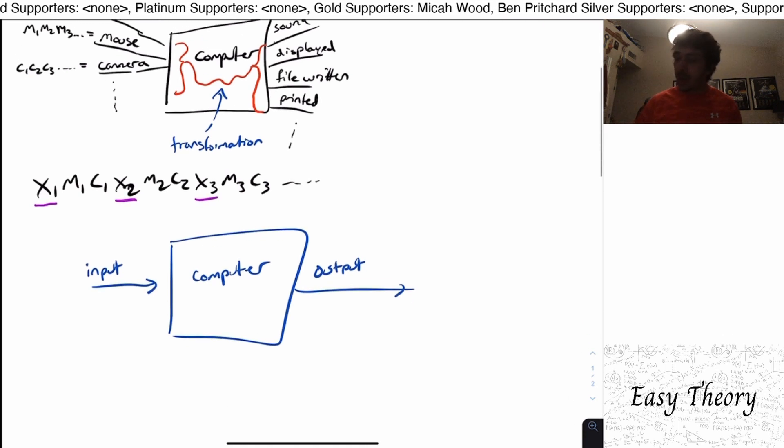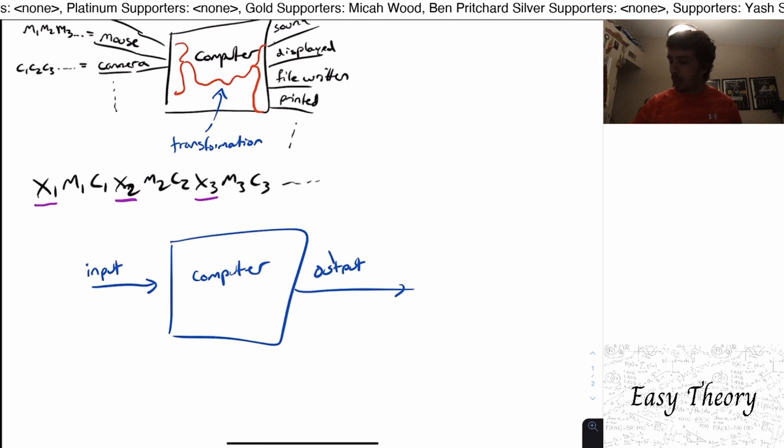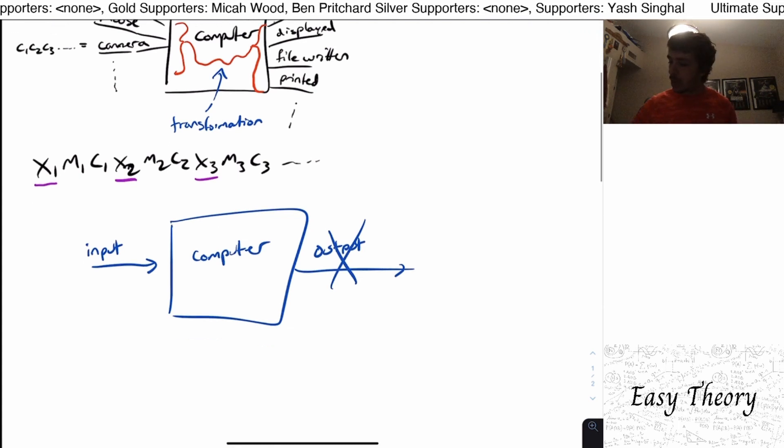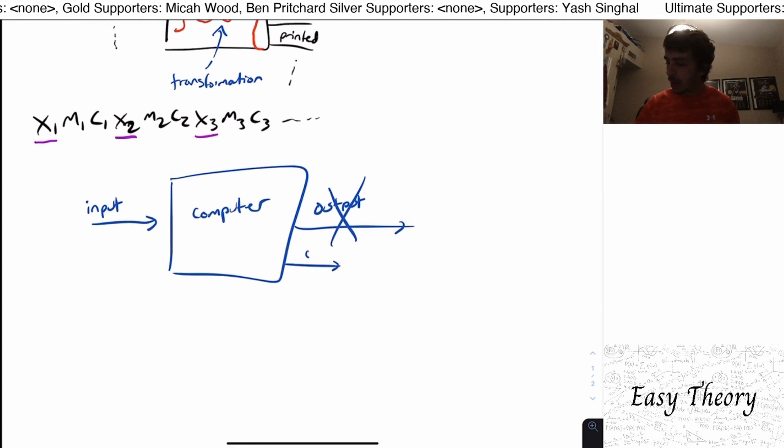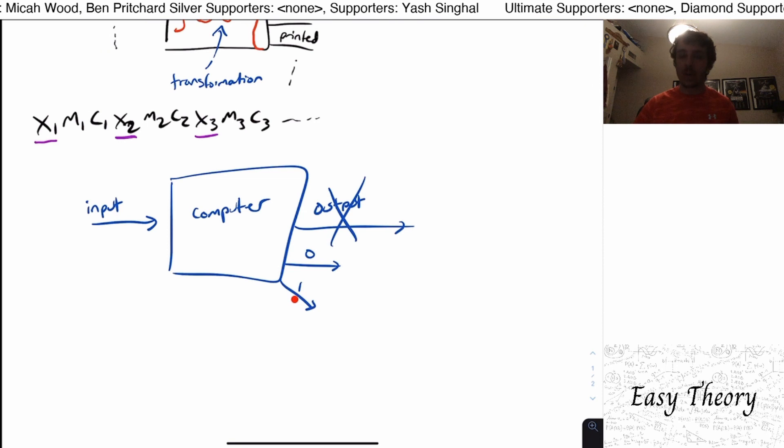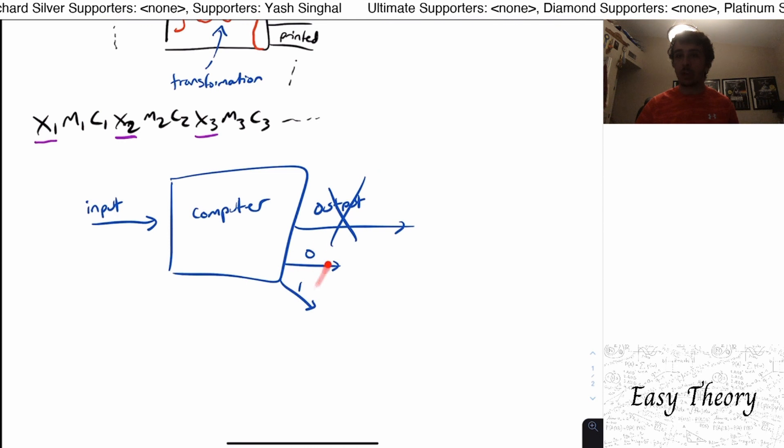But we can actually reduce the output by a lot. Instead of having a single whole string as output, we can output a single character, zero or one. So either we output a zero, or we output a one for each of the strings. And I'll invite you to figure out why we can actually assume that we can have a zero and a one here.